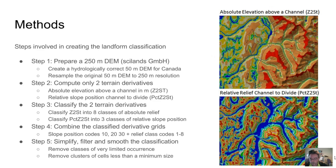The new classification is quite simple to implement using the following steps. Step 1: prepare a hydrologically correct DEM for all of Canada at 250 meters. Step 2: process the DEM to compute only two terrain derivatives — Z to stream and percent Z to stream. Step 3: classify the two terrain derivatives into eight classes of relief and three classes of landform position. Step 4: combine the classified grids to produce 24 unique combinations of absolute and relative relief. And step 5: simplify, filter, and smooth this initial raster classification.